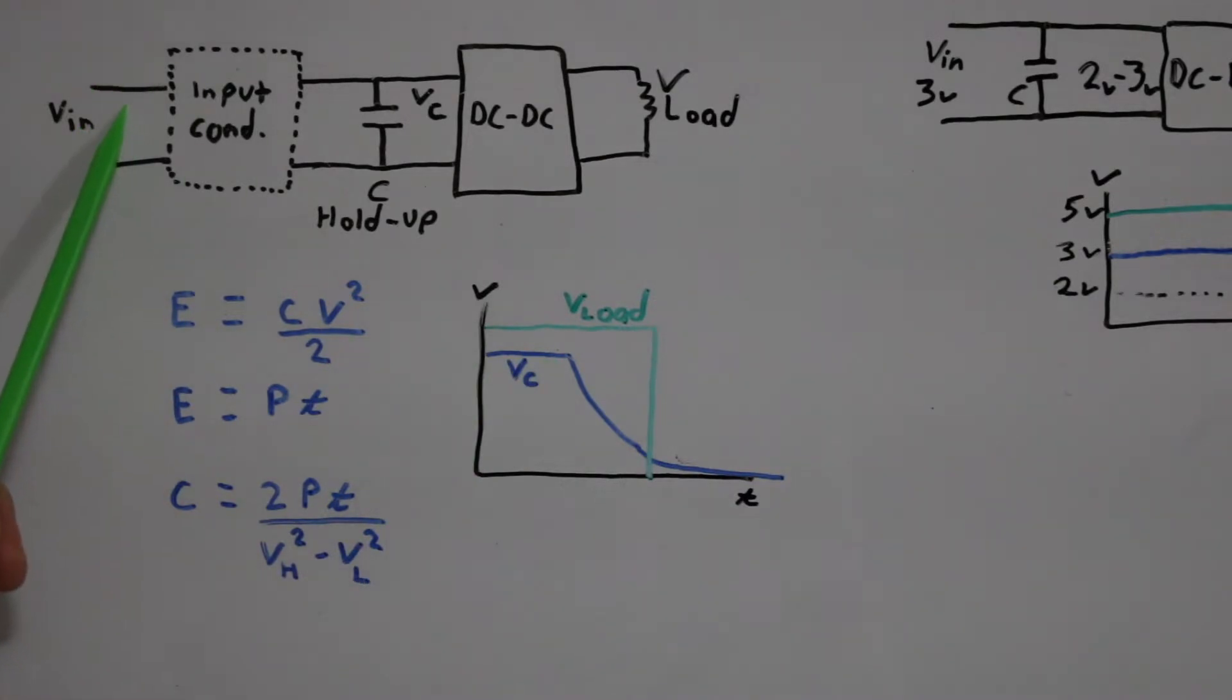If this is a momentary interruption, the capacitor voltage will discharge, keeping the load powered, and before this holdup time, power should come back, the capacitor should charge up again, the load is just going to see uninterrupted voltage.